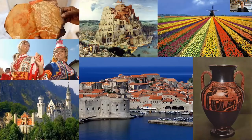On this slide, I've put together a colorful assortment of what can constitute cultural heritage — from manuscripts and folklore dances, to Castle Neuschwanstein in Germany, Dubrovnik Old Town, an ancient Greek vase, a painting, or a tulip landscape in the Netherlands.